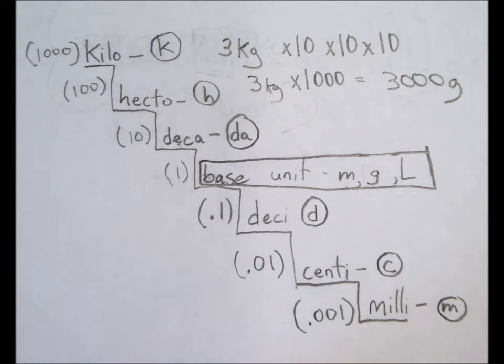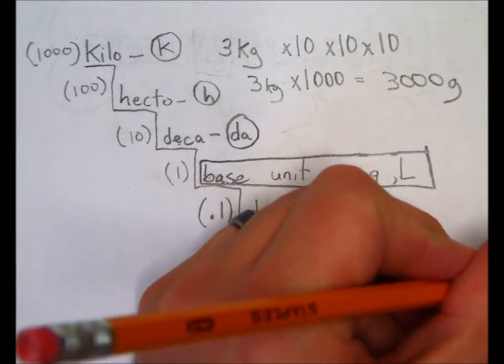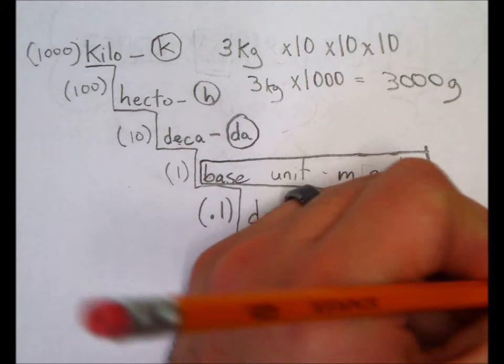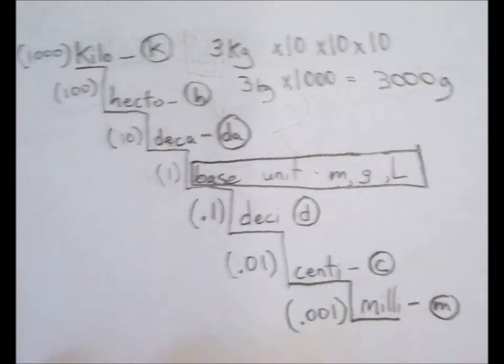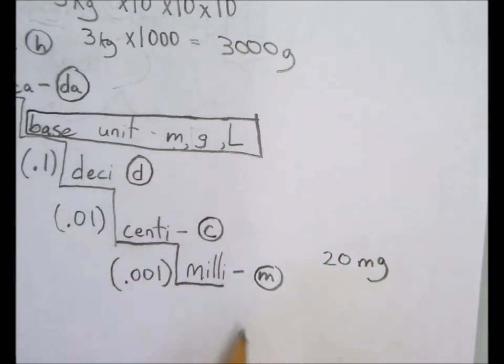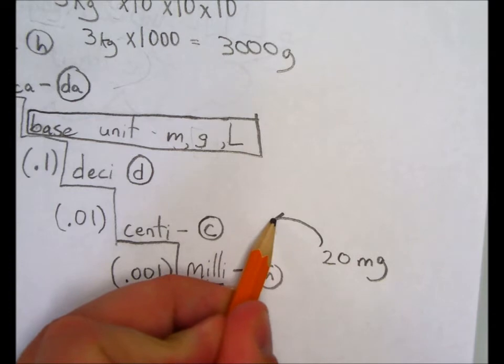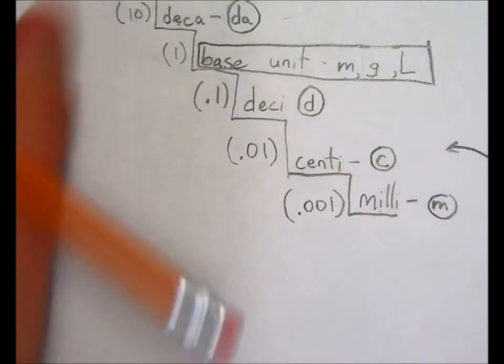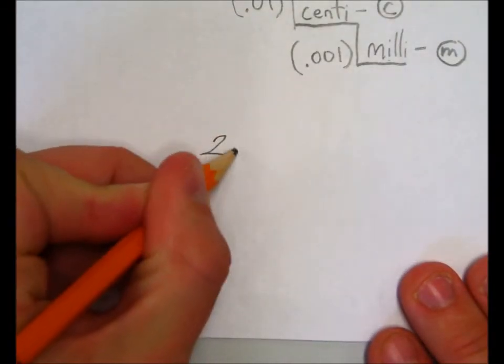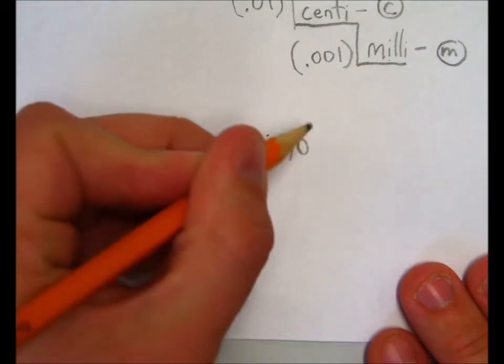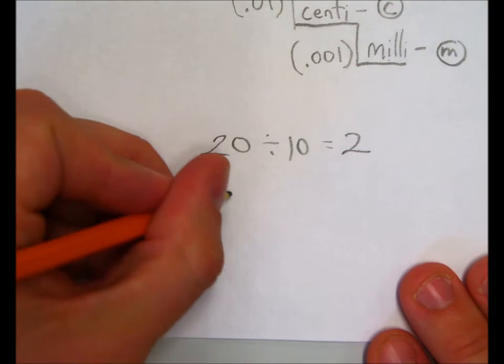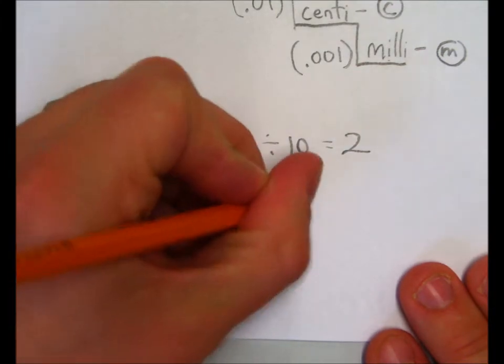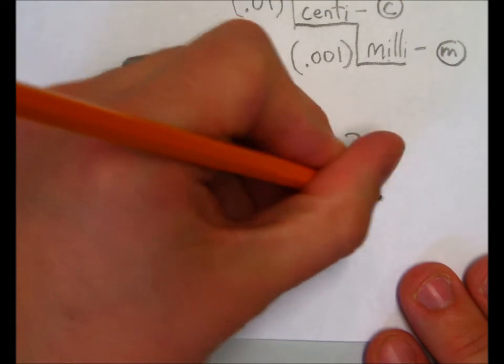If, on the other hand, we have 20 milligrams, and we want to see how many centigrams it would be, we divide by 10 for every step. So, there's one step between centi and milli, so that means we divide by 10 once. And 20 divided by 10 equals 2. So, 20 milligrams equals 2 centigrams.